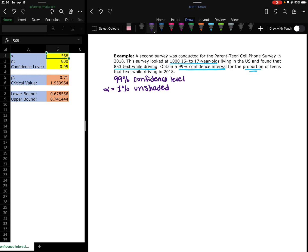So that's our alpha that we're going to use later to find the z-score. Other bits that we need: our sample size n is 1,000 and our x, the number of teens that are texting and driving, is 853.